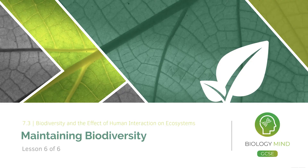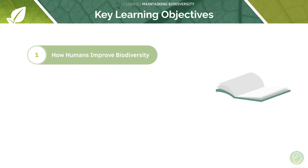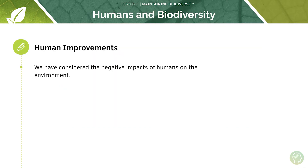Welcome to this tutorial on maintaining biodiversity. In today's tutorial we'll have a look at how humans may improve biodiversity, because as we saw in the first tutorial in this series, a reduced level of biodiversity is not beneficial for the ecosystem or for humans themselves. So this is our specification point — let's go ahead and address these points individually.